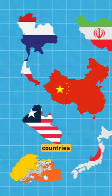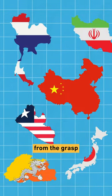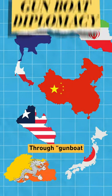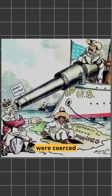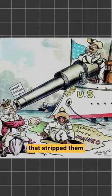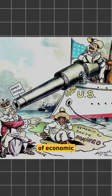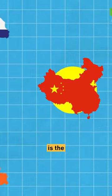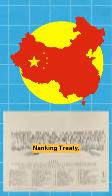Non-colonized countries were not safe from the grasp of free trade either. Through gunboat diplomacy, many countries were coerced into signing treaties that stripped them of economic autonomy. The most notorious example is the Nanking Treaty, which China was forced to sign in 1842 after losing the Opium War.